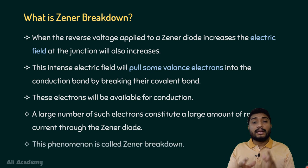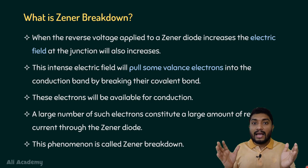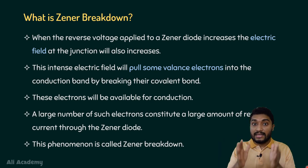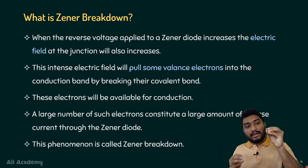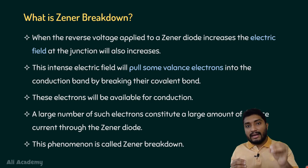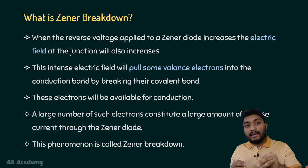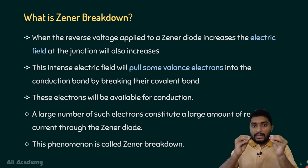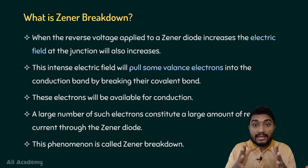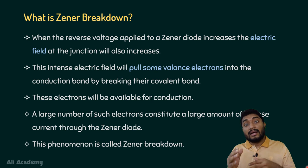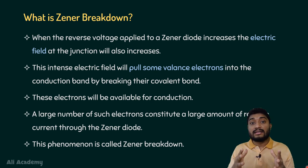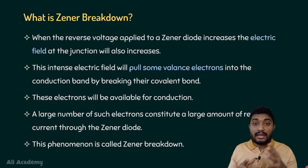This phenomenon is actually called zener breakdown. Because of the high electric field across the junction, some electrons that were in the valence band will be moved into the conduction band, breaking the covalent bond. These electrons in the conduction band actually conduct, and a large number of such electrons will produce a large amount of current flow across the zener diode. This is the reason for the conduction of electricity across the zener diode junction.